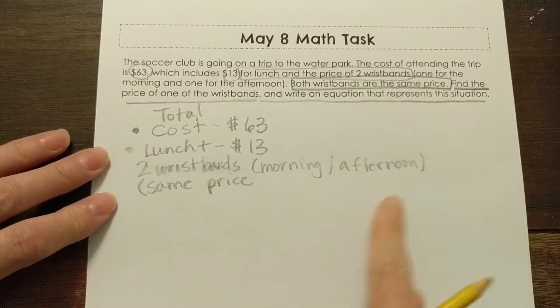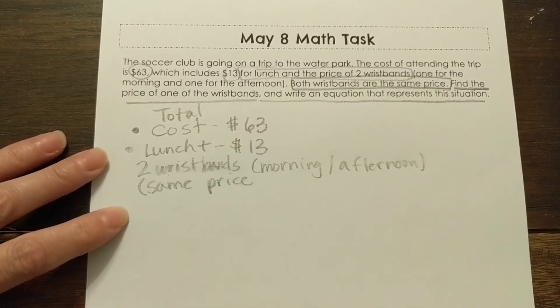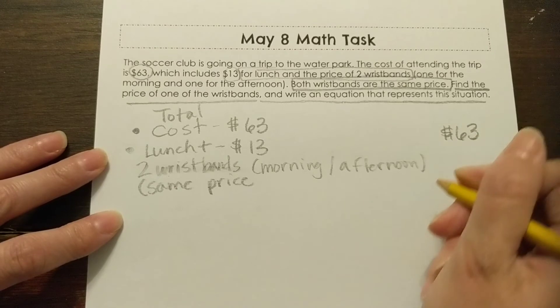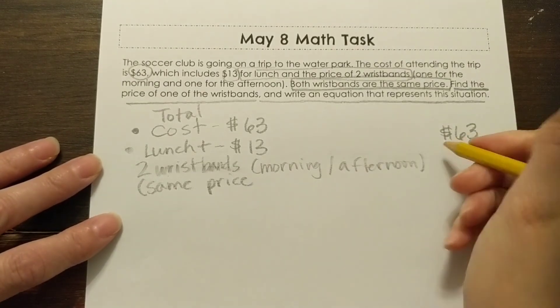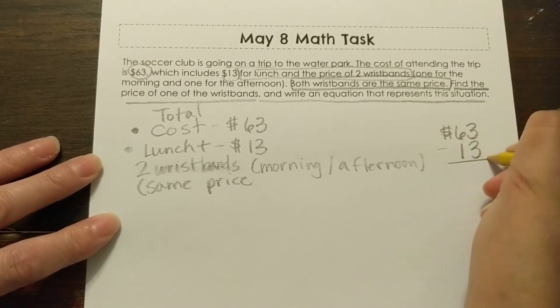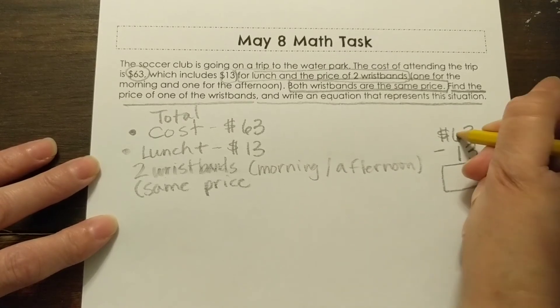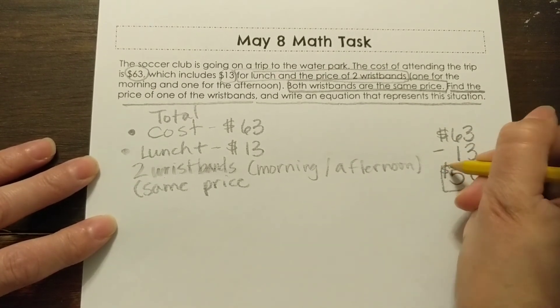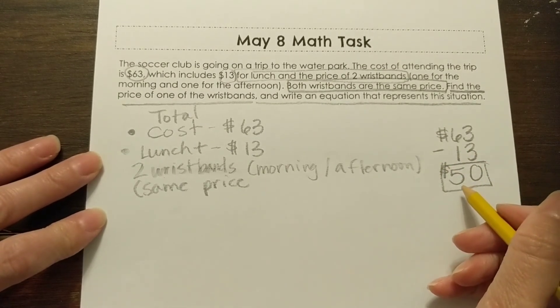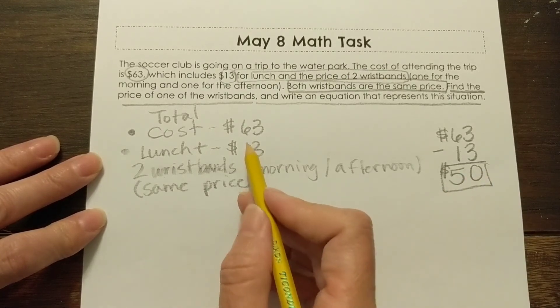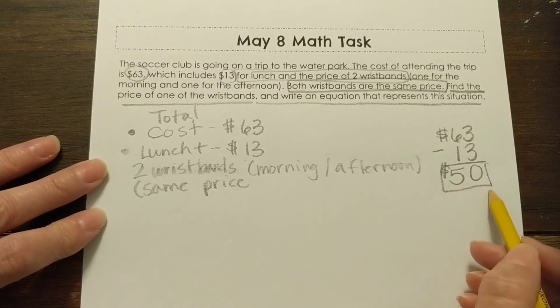Both wristbands are the same price. This is really important right here. Find the price of one of the wristbands and write an equation that represents the situation. Well, these are the things I know about the situation. And since I know $63, and I know it includes $13 for lunch and the price of two wristbands, we're going to have to figure out the price of the two wristbands. So if we take the $63 and we subtract that $13 for lunch, we're going to see what's left over. So three take away three is zero, and six take away one is five. So now we have $50 that's left. We've spent $63 on lunch so far. So the difference is going to be the cost of the wristbands.